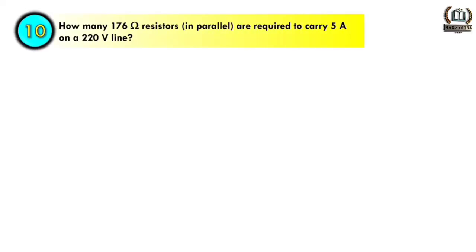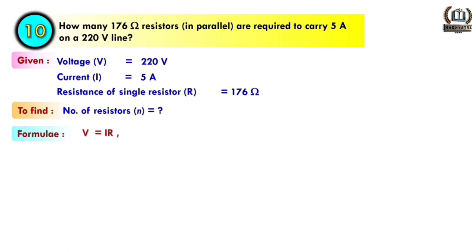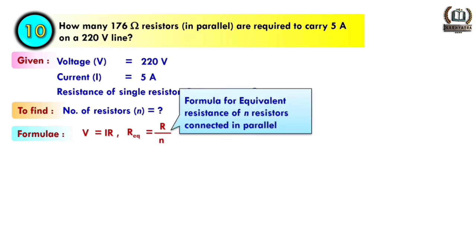Question number ten: how many 176 ohm resistors connected in parallel are required to carry 5 ampere on a 220 volt line? Given: V = 220 volt, I = 5 ampere, resistance of a single resistor R = 176 ohm. We need to find N. Formulas used: V = IR and R-equivalent = R/N, which is the formula for equivalent resistance of N resistors in parallel.